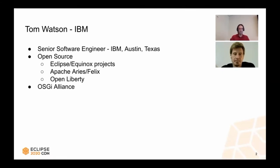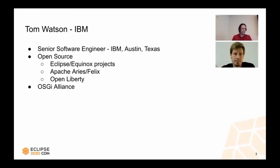I've been involved with open source since the early 2000s, starting with the Eclipse project and then we also started up the Equinox project there. I'm also involved with Apache projects, mainly Aries and the Felix project, and I also do development in Open Liberty. I'm involved with the OSGi Alliance doing specification work as well as reference implementations and compliance test implementation.